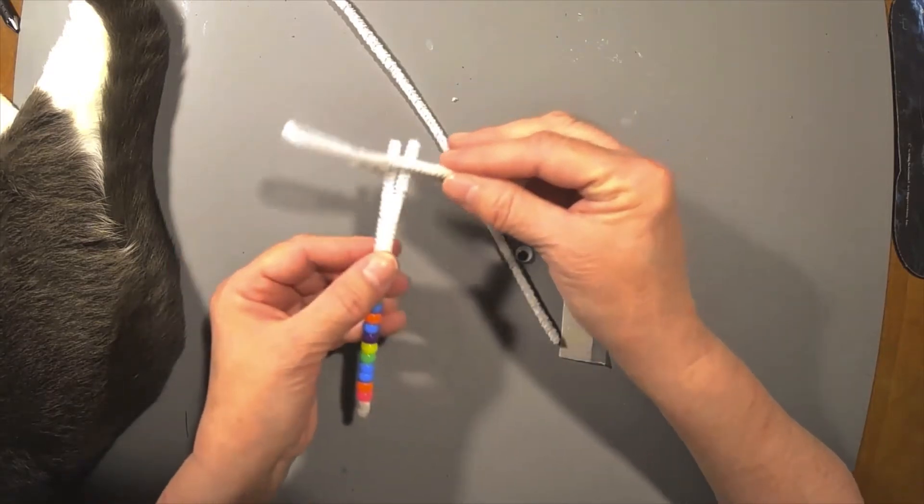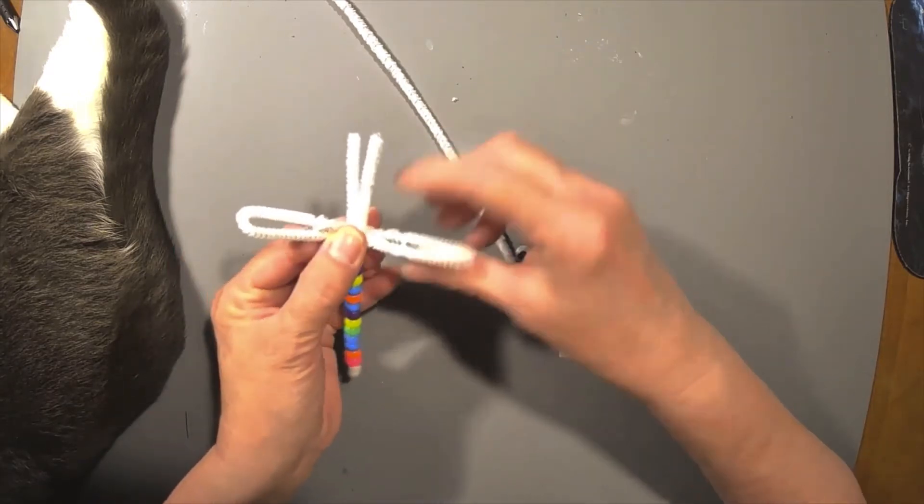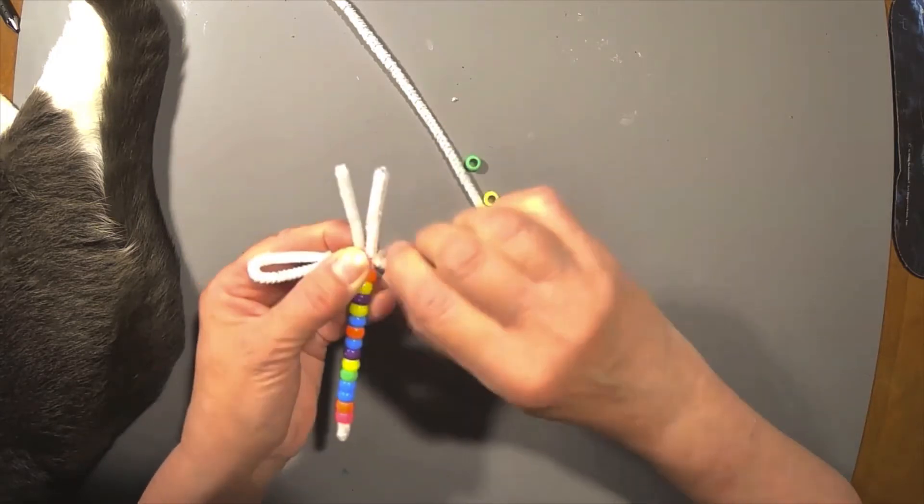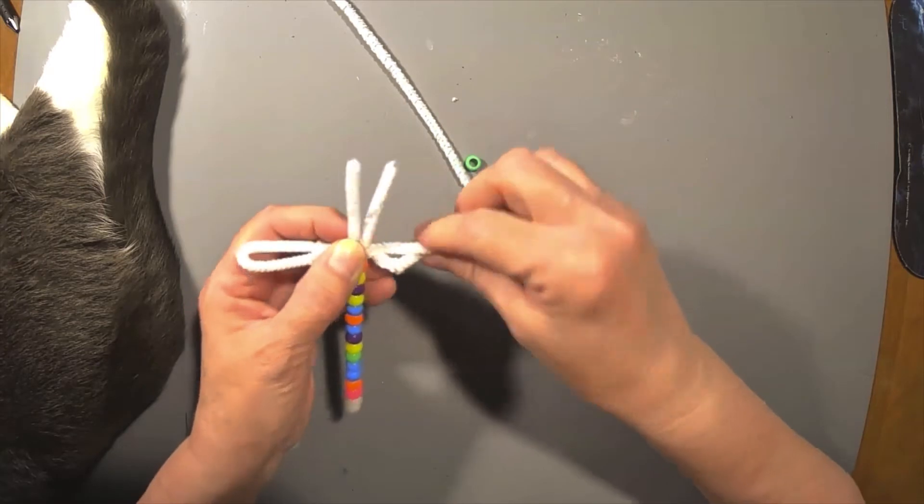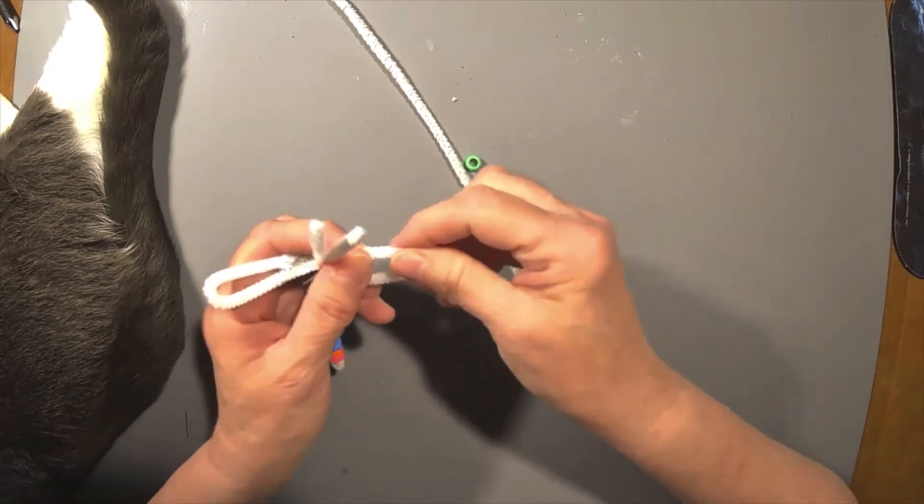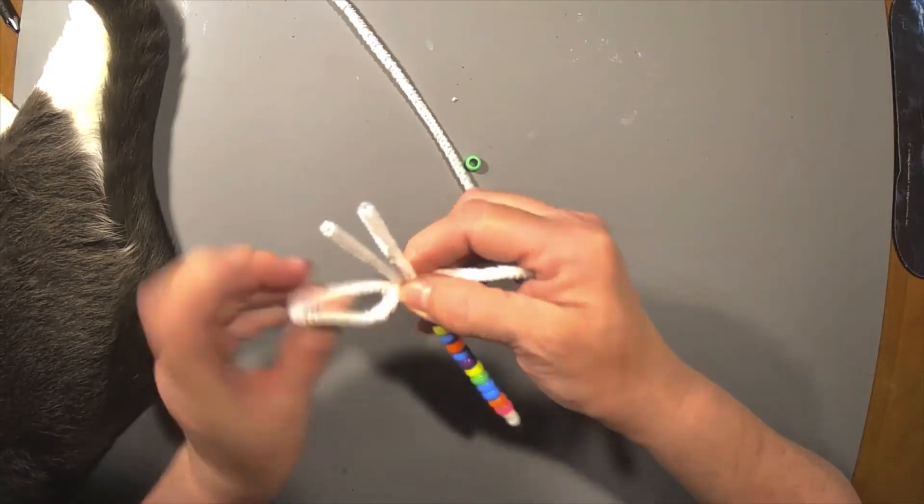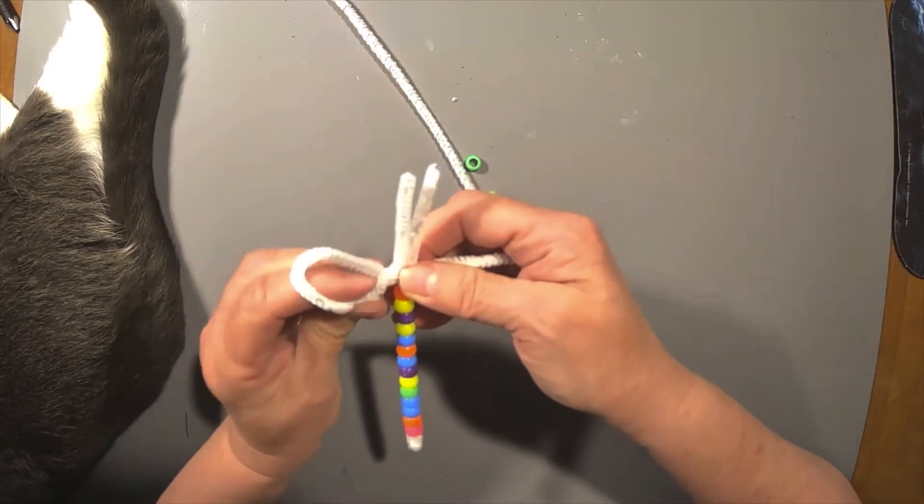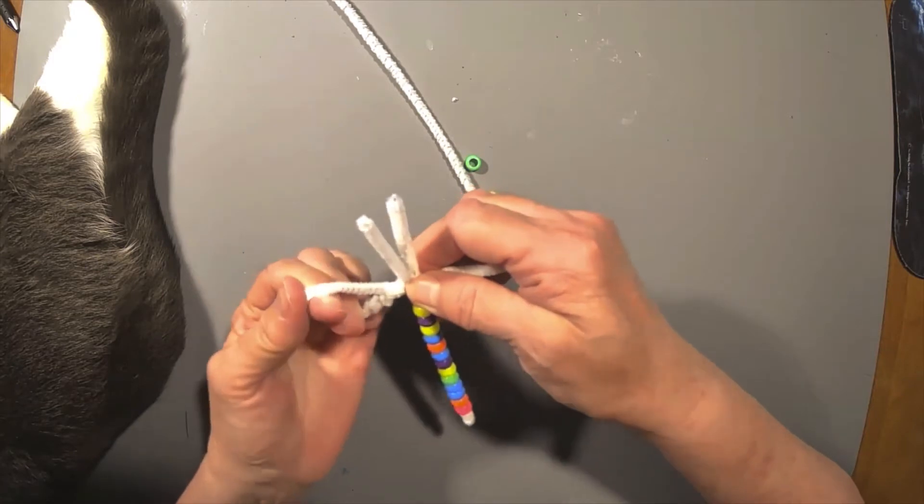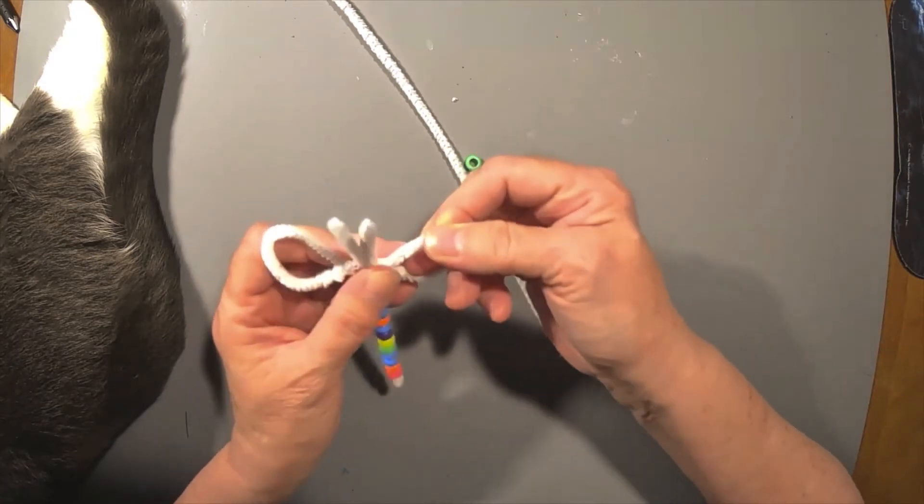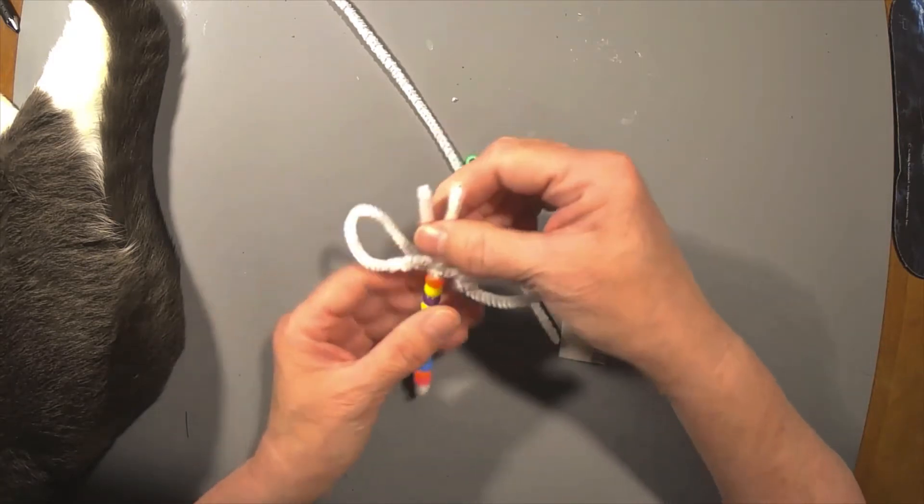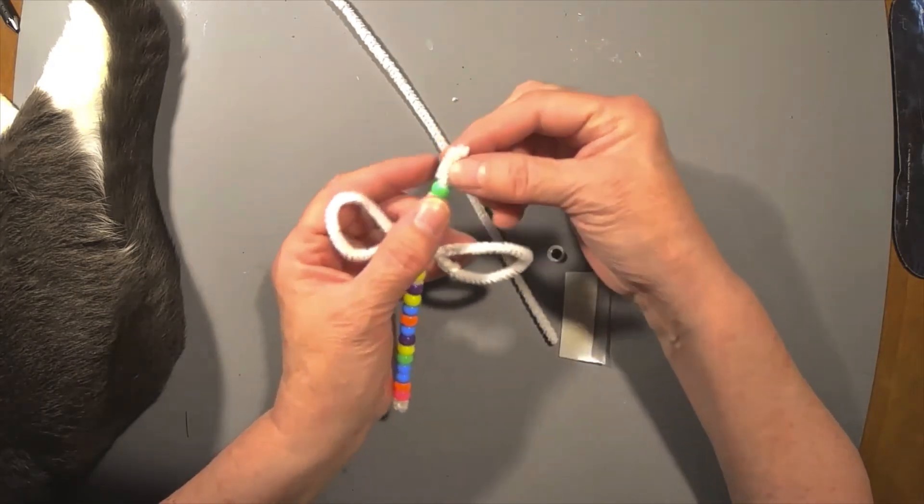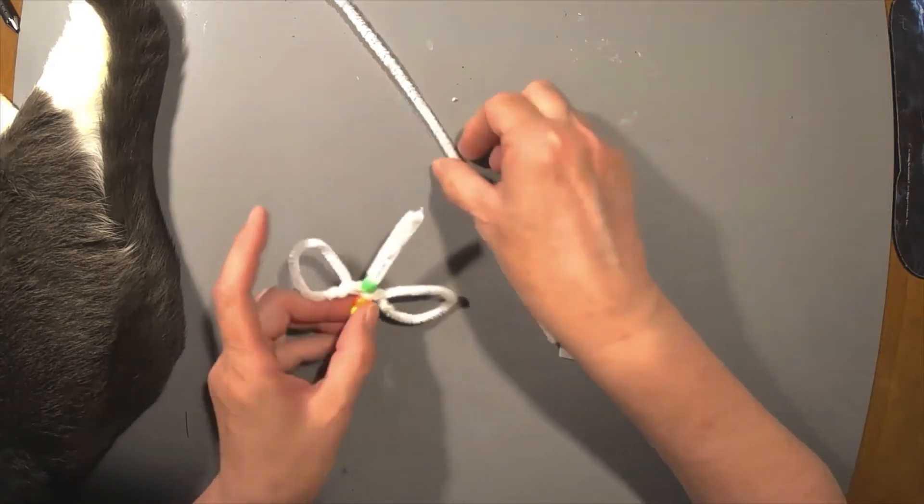Then you're going to slide it over the two ends and twist that pipe cleaner a couple times on one side and then twist it the same way on the other side. Then you can adjust your pipe cleaner so it looks more like wings because when you're twisting them they kind of get all bent out of shape but you can shape them back up. Then stick a bead right there and that'll make a little spacer.